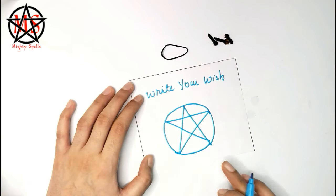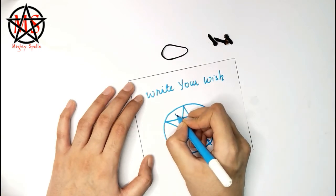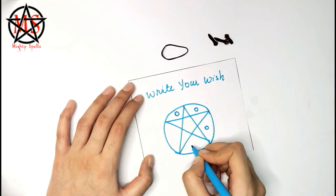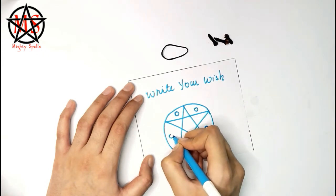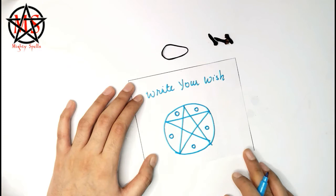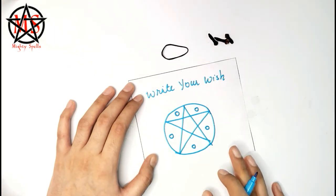After doing this, you have to make small circles on each side. Look at the figure very carefully and do the spell right step by step so that you don't miss out on anything.